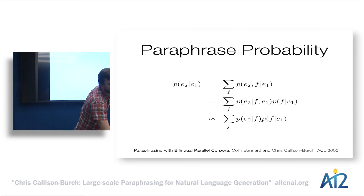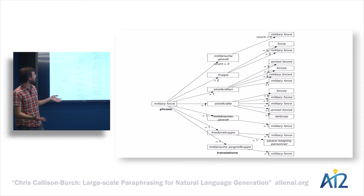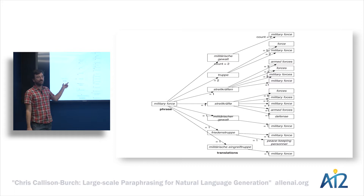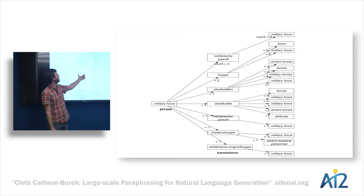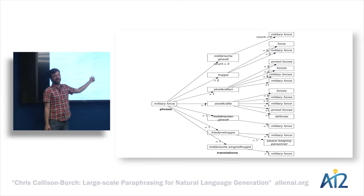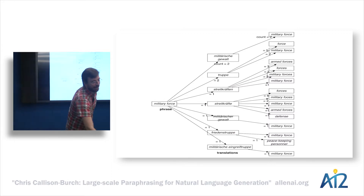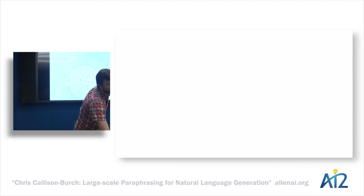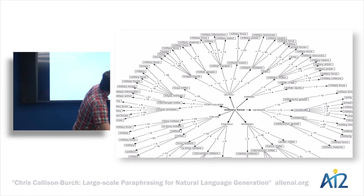These probabilities are estimated using maximum likelihood estimators. We ask: in our parallel corpus, how often was the phrase 'military force' aligned to a particular German phrase? That gives us one probability. Then how often was that German phrase aligned with different English phrases? That gives us the other probability. And since we're interested in all languages, we just pivot over everything.